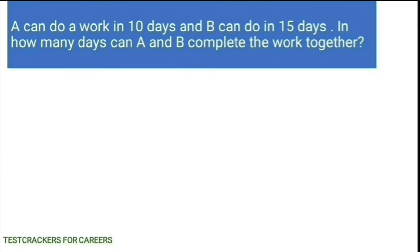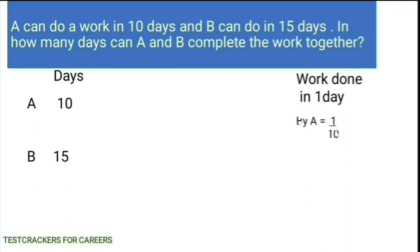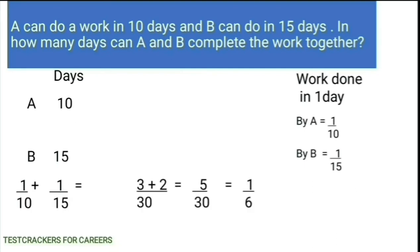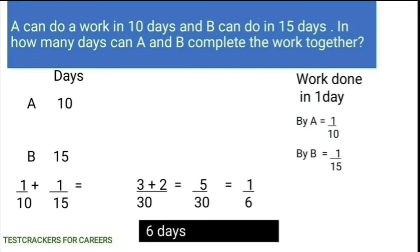A can do a work in 10 days and B can do it in 15 days. We have to find out in how many days A and B can complete the work together. The work done in 1 day by A is 1 by 10 and by B is 1 by 15. So the work done in 1 day by A and B is 1 by 10 plus 1 by 15, which is 1 by 6. Inversing it, we get the number of days A and B take to complete the work, that is 6 days.